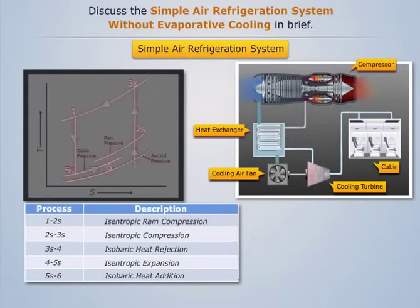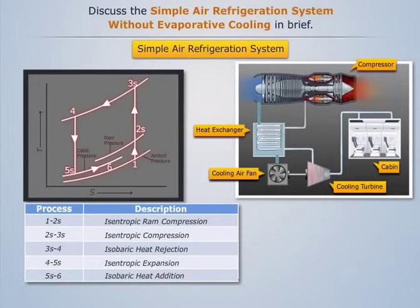Therefore, the cycle 1-2S-3S-4-5S-6 constitutes the ideal simple air refrigeration system without evaporative cooling.